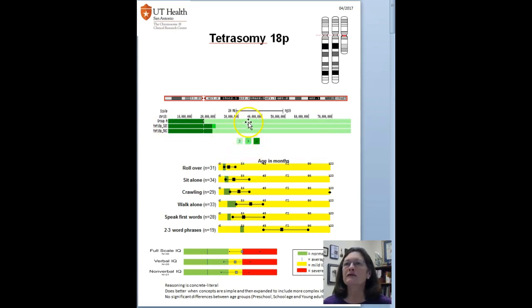Here is the legend for that. This color green, the light green, means you have two copies. The medium color green means there's three copies. And the dark green is four copies of Chromosome 18. So Group A has four copies of the P arm, and only all of the P arm, and only the P arm. There's only two copies of all of the Q arm, and that's almost everybody with Tetrasomy 18P.